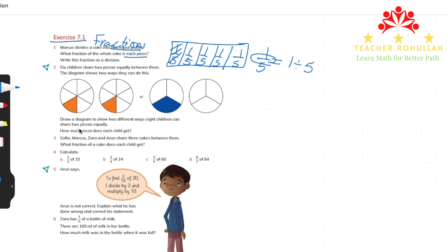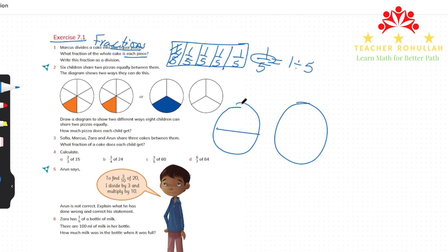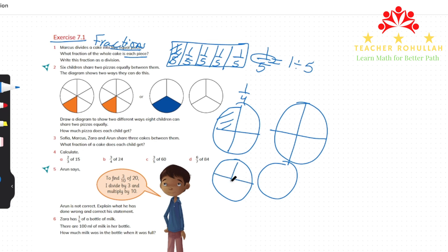Now it says draw a diagram to show two different ways children can share two pizzas equally. For example, if we have two pizzas, we can cut them into four equal pieces. There are eight children, so each child gets one-fourth of the whole pizza. We can also cut the pizzas into eight equal pieces.